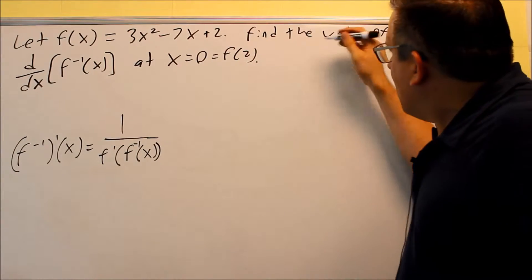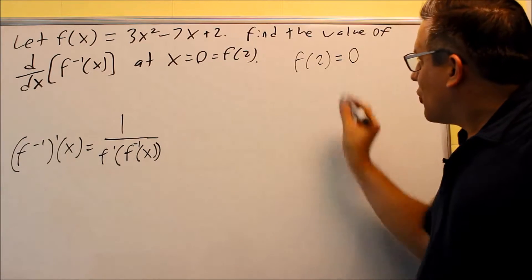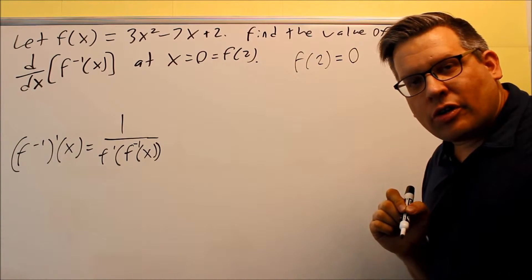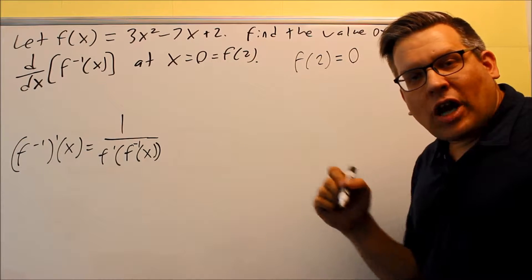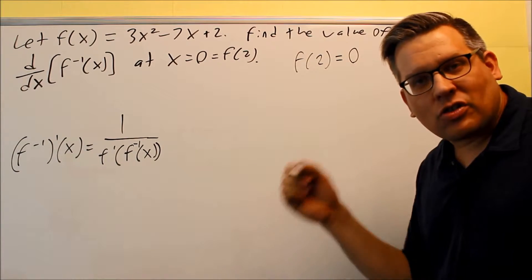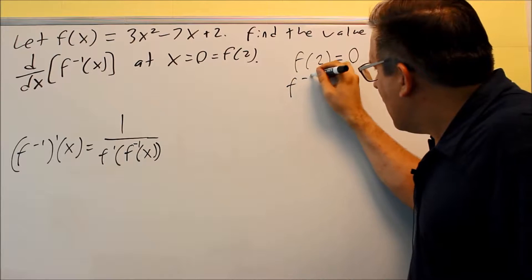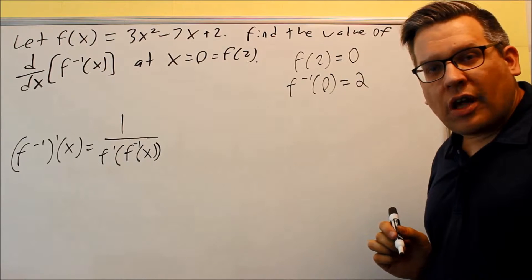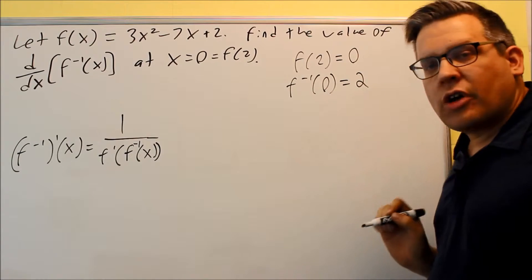Let's look at what they're asking. It says that f of 2 equals 0 — so you put 2 in for x and you get 0 as a result. Thinking about what we covered earlier for inverses: the x and y values are switched. So for the inverse, if I put 0 in, I should get 2 as the y value. The x and y values are switched — putting 0 in gives us 2 as the result.